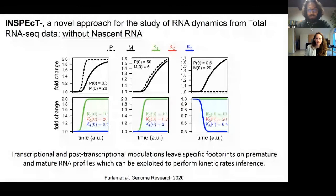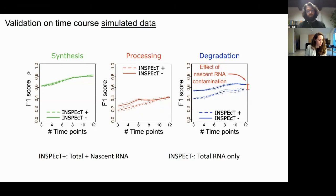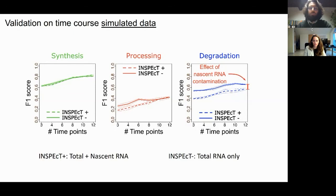Here is validation of the classification performance of INSPECTr, both INSPECTr-Plus (with nascent RNA) and INSPECTr-Minus (without nascent RNA). We tested whether we could identify variable versus constant synthesis, processing, and degradation rates in simulated data. The x-axis shows the length of the time series, and the y-axis shows the F1 score. For synthesis and processing, INSPECTr-Plus and INSPECTr-Minus have similar performance. More interestingly, for the degradation rate, INSPECTr-Minus outperforms INSPECTr-Plus — removing the nascent RNA data actually improves results because we are also removing confounding factors like nascent RNA contamination.